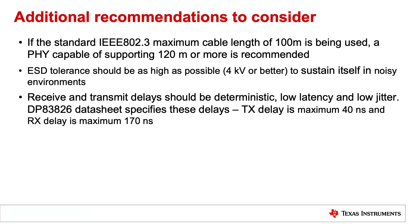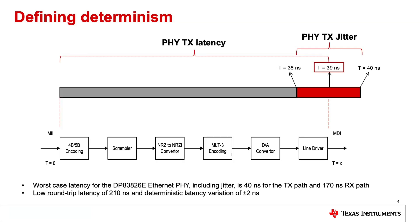Now how can the user know if the PHY has low latency and jitter? Let's start by defining determinism, jitter, and latency. This diagram shows the different steps a PHY layer needs to perform to enable an Ethernet connection to transmit data. These coding and decoding steps take time, which defines the determinism and the jitter and latency of the system, as shown in the example.